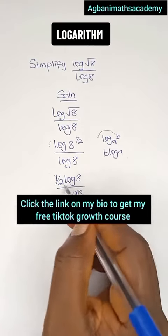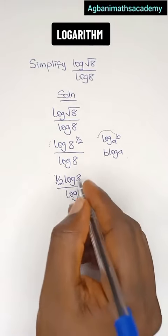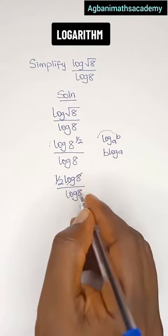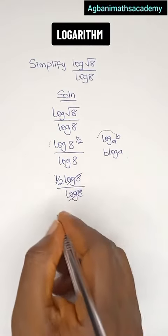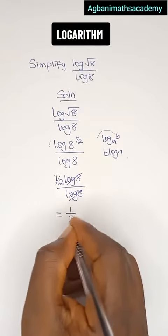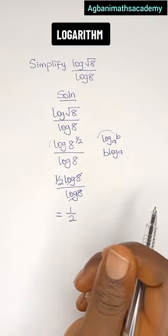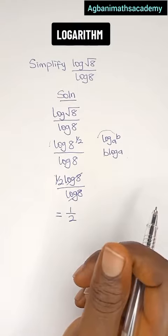Next, log 8 and log 8 can cancel out. So this will cancel out this. Therefore, our final answer is equal to 1 over 2. This is the simple answer to this question.